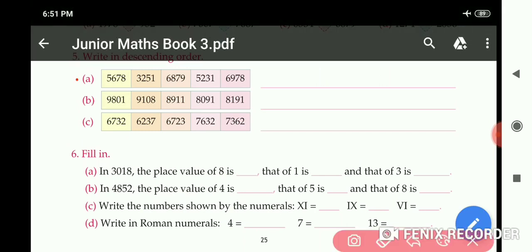Question number 5, part A: 5,678, 3,251, 6,879, 5,231, 6,978. Which is the greatest digit among all these numbers? 6,978. So we write down this number at first. Then this is at second, then number 3, number 4, and this is at number 5.